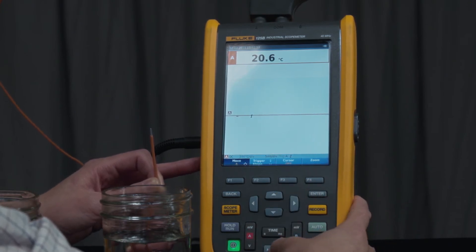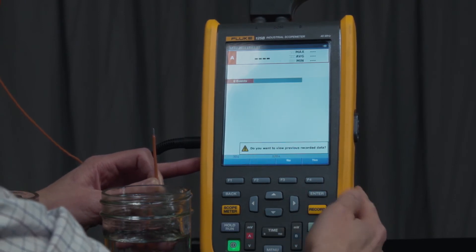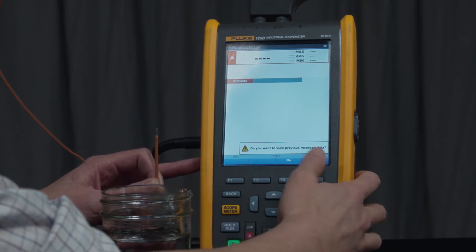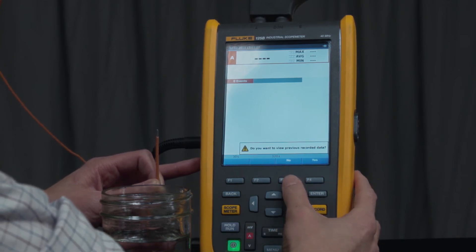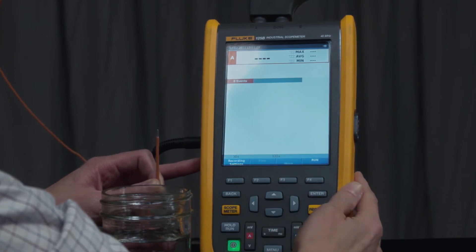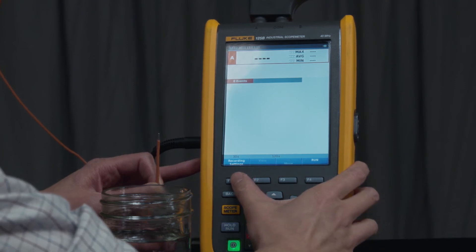Now, to get to the record mode, again, press menu. Scroll down to recorder and press enter. We're going to say no, we don't want to view previously recorded data. And then press F1 for record setting.